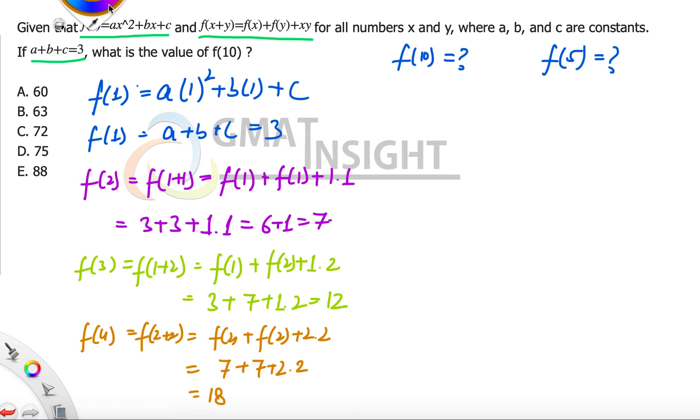Having got this thing, now let's quickly move on to calculation of f(5). f(5) can be written as f(2+3), which means f(2) + f(3) + 2×3. f(2) we have 7, f(3) we have 12, plus 2×3 which is 6, so we have 25.